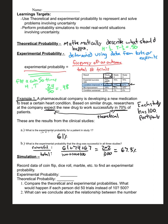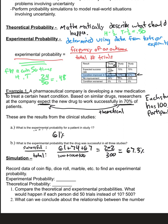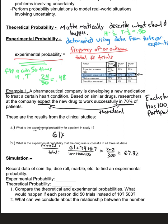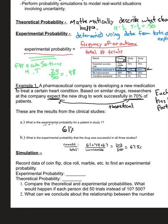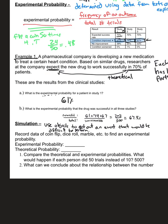Now let's talk about what an actual simulation is. We've covered theoretical and experimental probability. Doing a simulation is when we use objects to act out an event that would be difficult to perform directly.